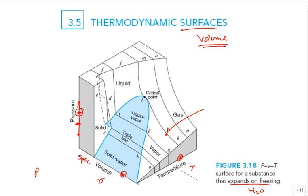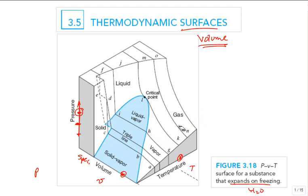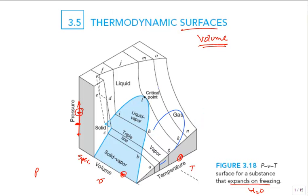Let's identify the three single-phase regions on this PVT surface. You have the gas or vapor region — this becomes more ideal gas-like up in that area; it's all the vapor region. Then you have a liquid region and a solid region.